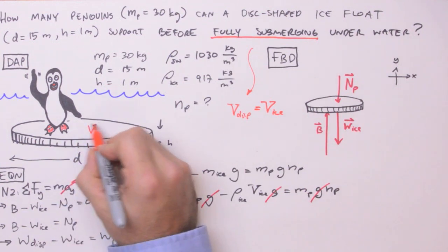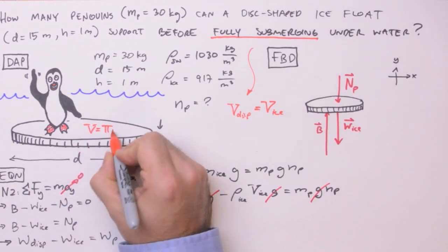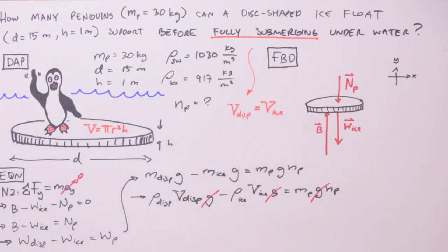And while we're on the topic of volumes, we should note the volume of a disk. It's just pi times the radius squared times the thickness. Good. Now that we've determined that the volumes are identical, we can factor those out to the front here and use our expression for the volume of a disk.